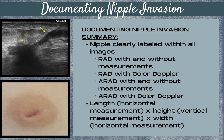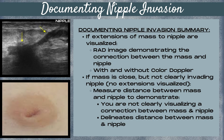However, any spiculations or extensions to the nipple should be excluded from the measurement of the mass. Depending on the protocol of your site, some sites will have you measure the size of the extensions between the nipple and the mass. If you visualize extensions of the mass connecting to the nipple, you want to take a radial image demonstrating those connections, with and without color Doppler.